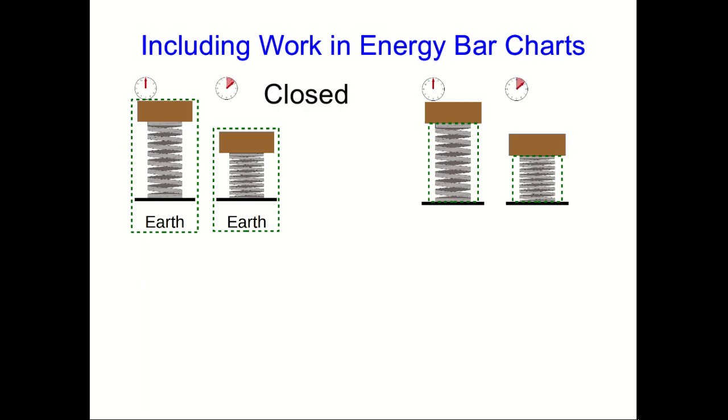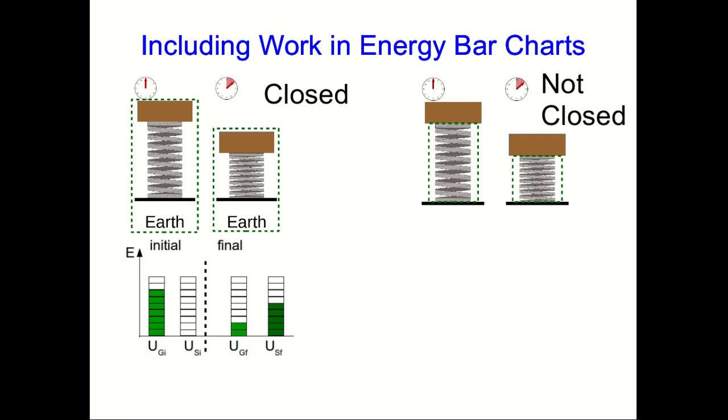And in particular, one of them is a closed system whereas the other is not closed. And so the energy bar chart for the first choice looks like this, where we see that the system is converting gravitational potential energy into spring potential energy. Whereas in the non-closed case, the system is gaining energy because work is being done on it by an outside force, and all of that gained energy ends up as spring potential energy.